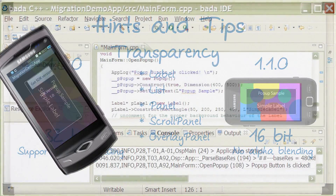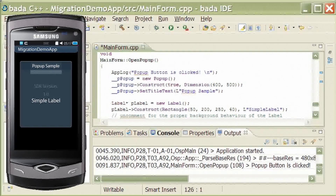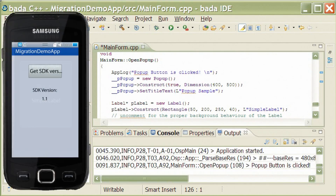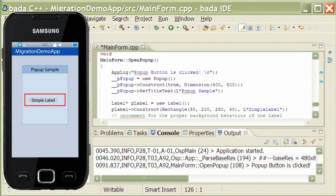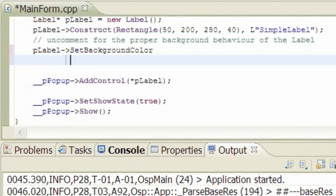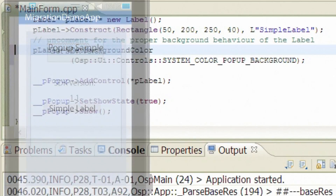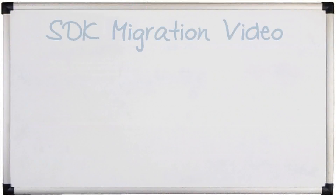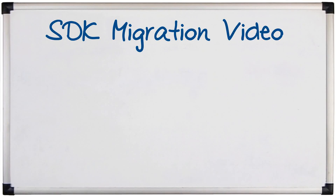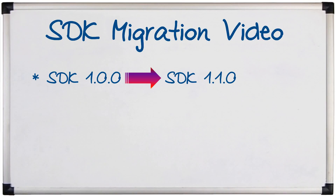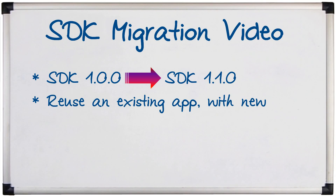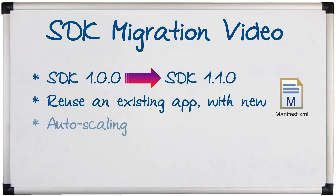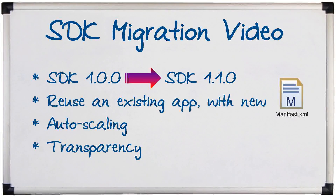We can show this effect in a simple example. Here we're showing a label in a pop-up using a device with alpha blending. If we simply reuse the code without modifications, the label will use the same background color as the form. To improve this appearance, you can change the background color using the method SetBackgroundColor. In summary, this video showed you how to migrate an existing Bada app developed with SDK 1.0.0 to SDK 1.1.0 by reusing an entire existing project with a new manifest.xml file, while also covering auto scaling and transparency hints to maintain expected look and feel.